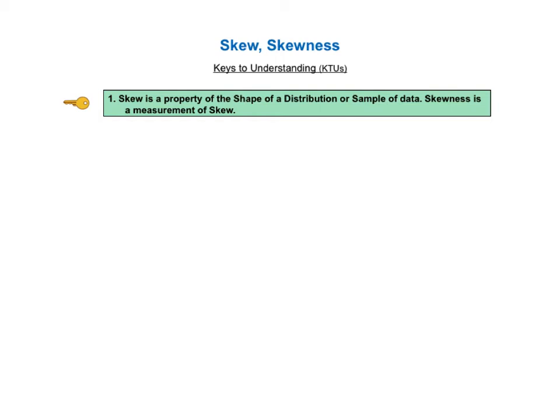As usual in the book and in these videos, we start by going through a list of keys to understanding the concept. This is to give you, all on one page, the key things you need to know to understand the concept. And then we will go into detailed explanations of each of the keys. For this video there are four keys to understanding, or KTUs.